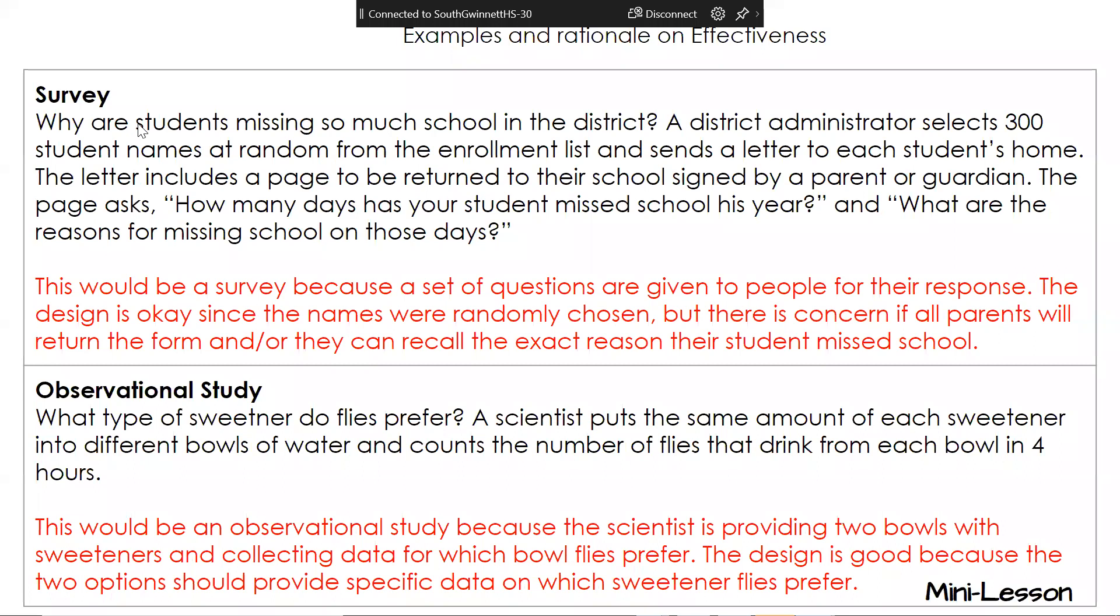Survey. Why are students missing so much school in the district? A district administrator selects 300 student names at random from the enrollment list and sends a letter to each student home. The letter includes a page to be returned to their school, signed by a parent or guardian. The page asks, how many days has your student miss schooled this year? What are the reasons for the miss school on those days? So this would be a survey because the set of questions are given to people for their response. The design is okay since the names were randomly chosen. Biggest thing in this section is that you always want to look for the word randomly chosen. There's a concern if all the parents are going to return the form or they can remember that exact reason why the student miss school. Looking back at this example, we see that there's a question that is being asked to the parent and they also say random. That's what's going to tell us this is going to be a survey.